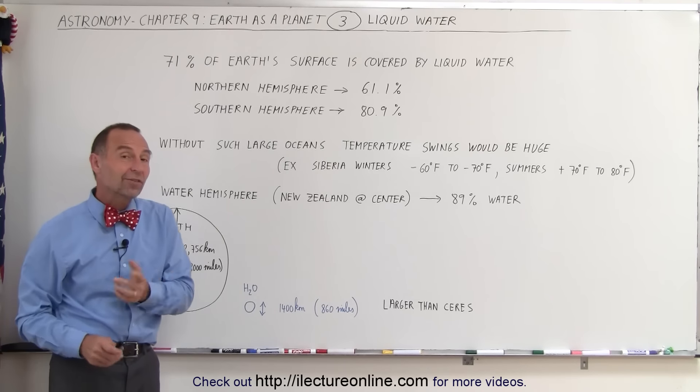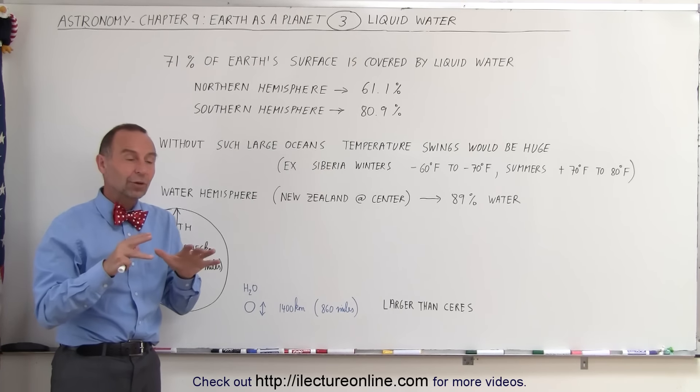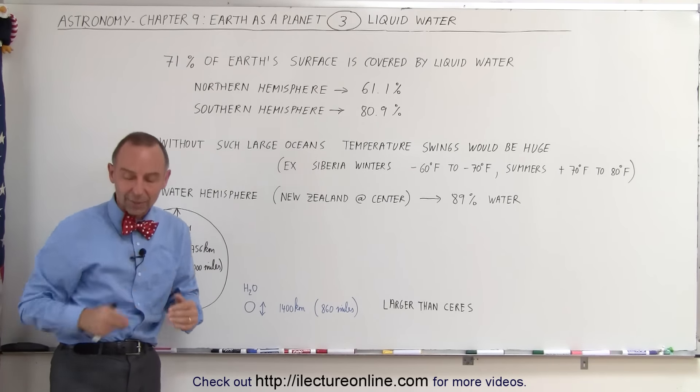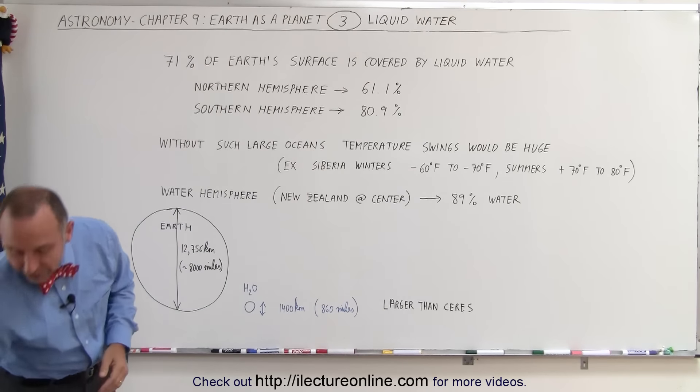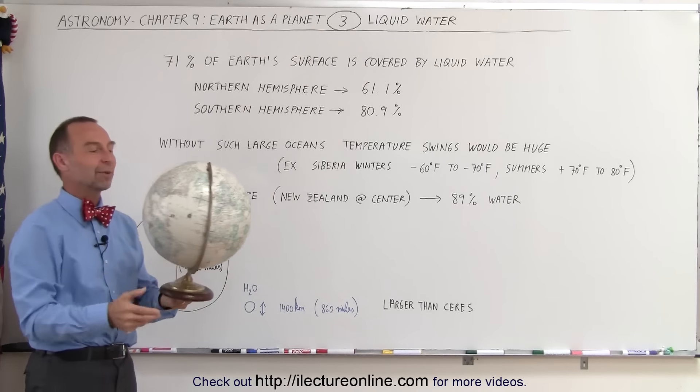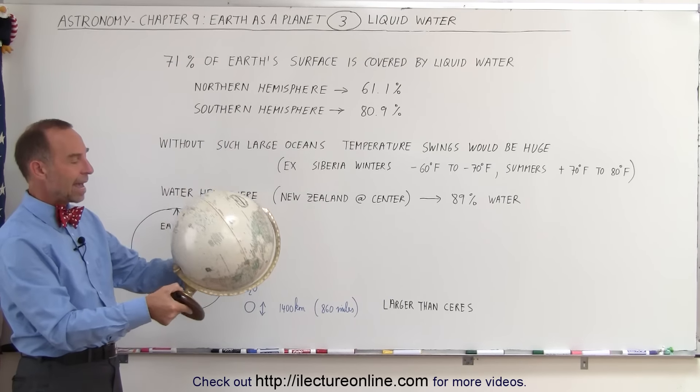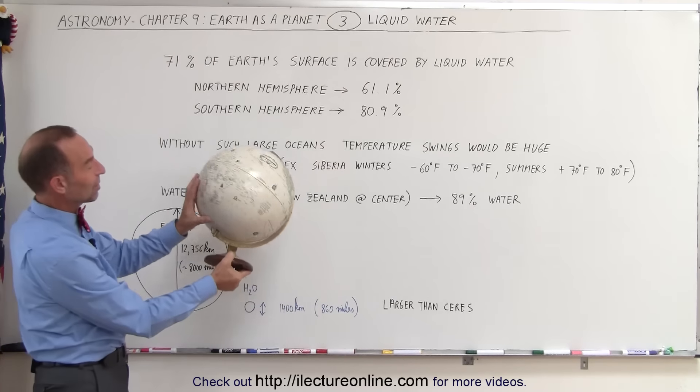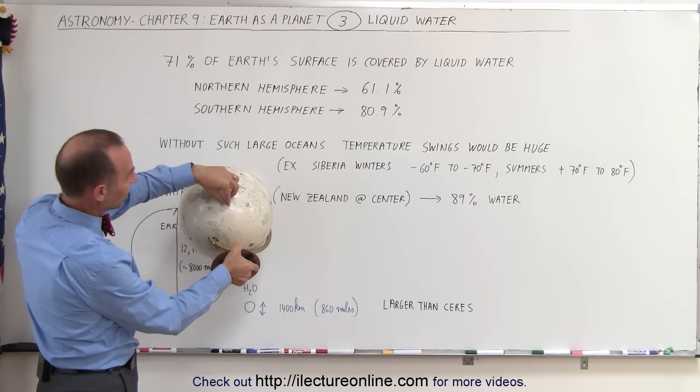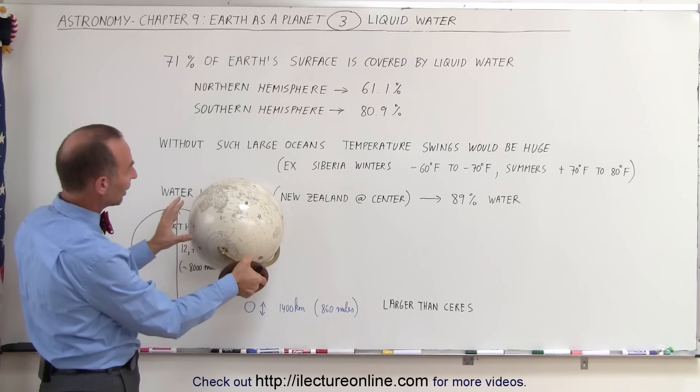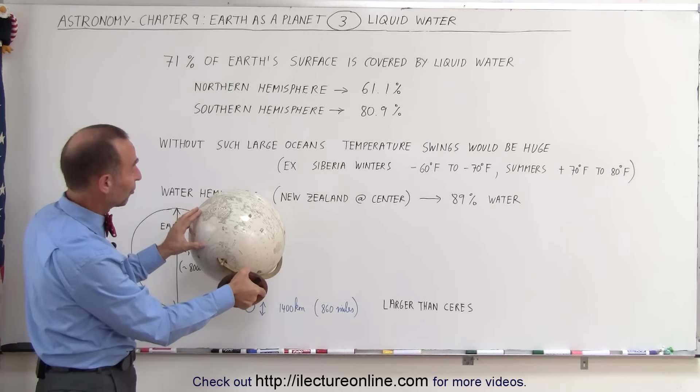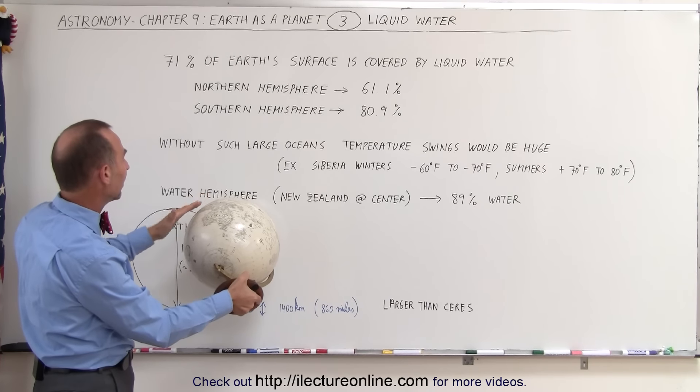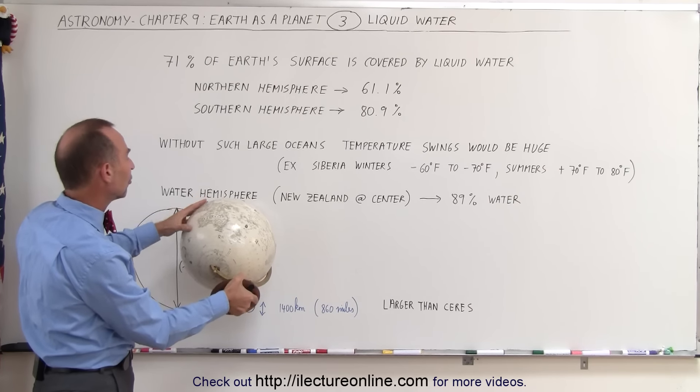What's also interesting is that the land mass is not evenly distributed. If you grab a globe and look at it in such a way that New Zealand is at the center, notice that the only other land masses you can see from that perspective is Australia and Antarctica and maybe a little bit of the islands near Indonesia.